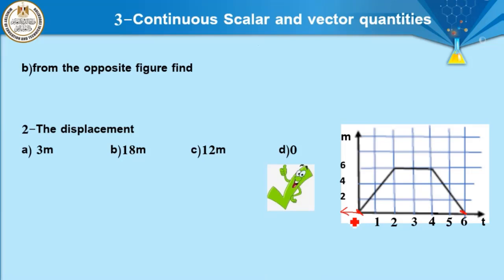In another graph problem: this object starts from rest, covers a distance of 6 meters, then from 2 seconds to 4 seconds the object is at rest, then it returns to the starting point. Total distance equals 6 plus 6 equals 12 meters. Since the starting point and ending point are the same, displacement equals zero.